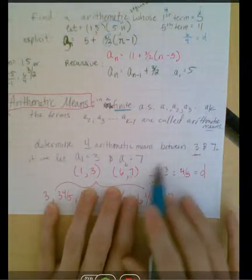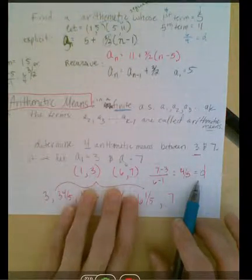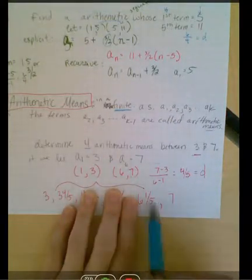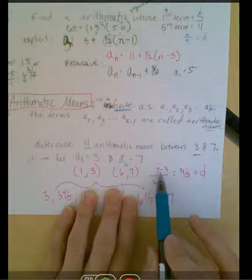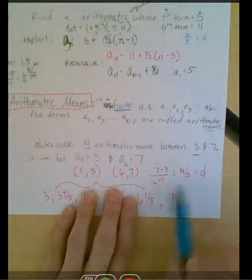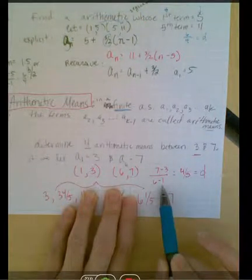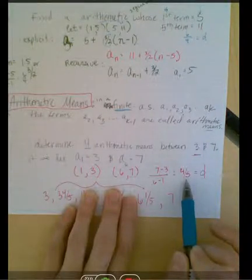allowing us to infer what a common difference would be if I broke up all of those values among those five terms. So 7 minus 3 gives us 4, 6 minus 1 gives us five steps between those two terms.